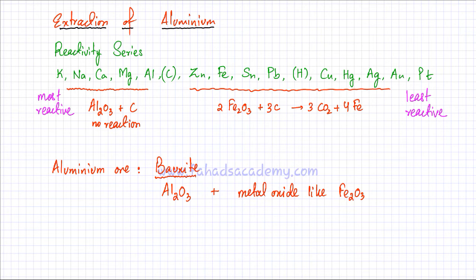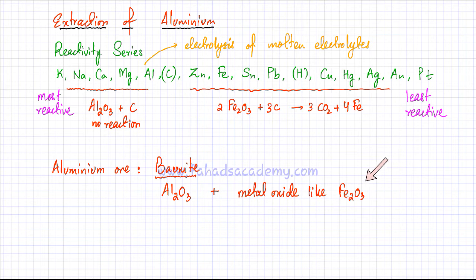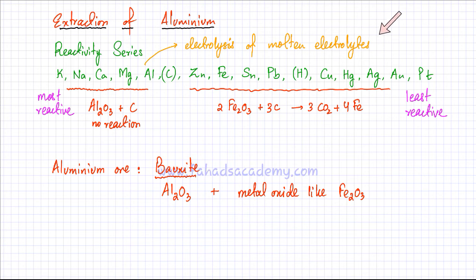For more reactive elements — those more reactive than carbon — the method that applies is electrolysis of molten electrolytes. This is the method used to extract aluminium from alumina. To recap: bauxite is aluminium oxide mixed with a lot of impurities, mostly other metal oxides like iron oxide. We're going to discuss how to extract aluminium from aluminium oxide by electrolysis of molten electrolytes.